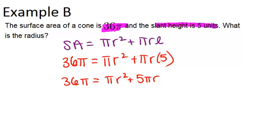We can divide each term by pi, since they all have a pi in them, in order to cancel that out, and get 36 equals r squared plus 5 r.